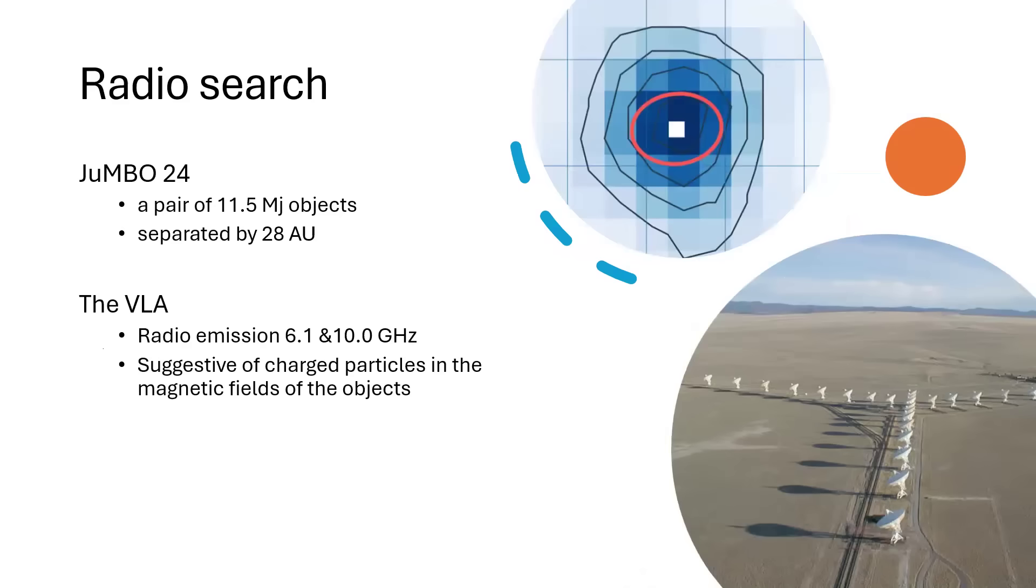Now the radio telescopes got in on the act. The VLA, the very large array out there in the desert, started looking for these objects and detected radio emissions in the 6 to 10 gigahertz bands, suggestive of charged particles in trapped bands caused by magnetic fields around these objects, much as we see radio emissions from Jupiter.